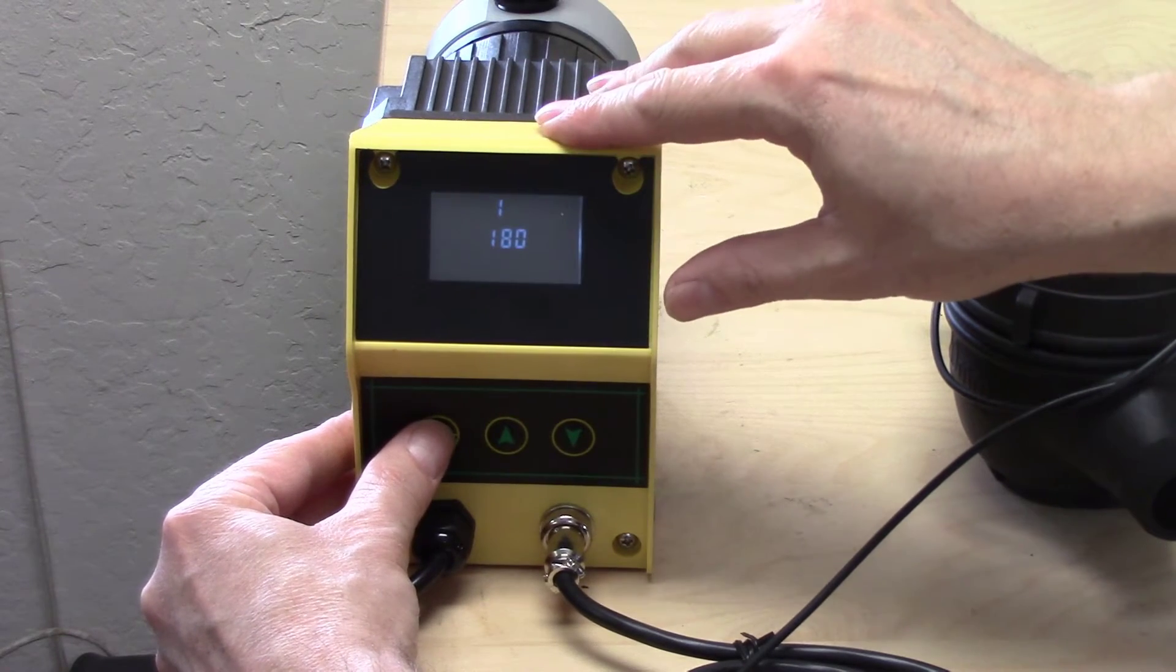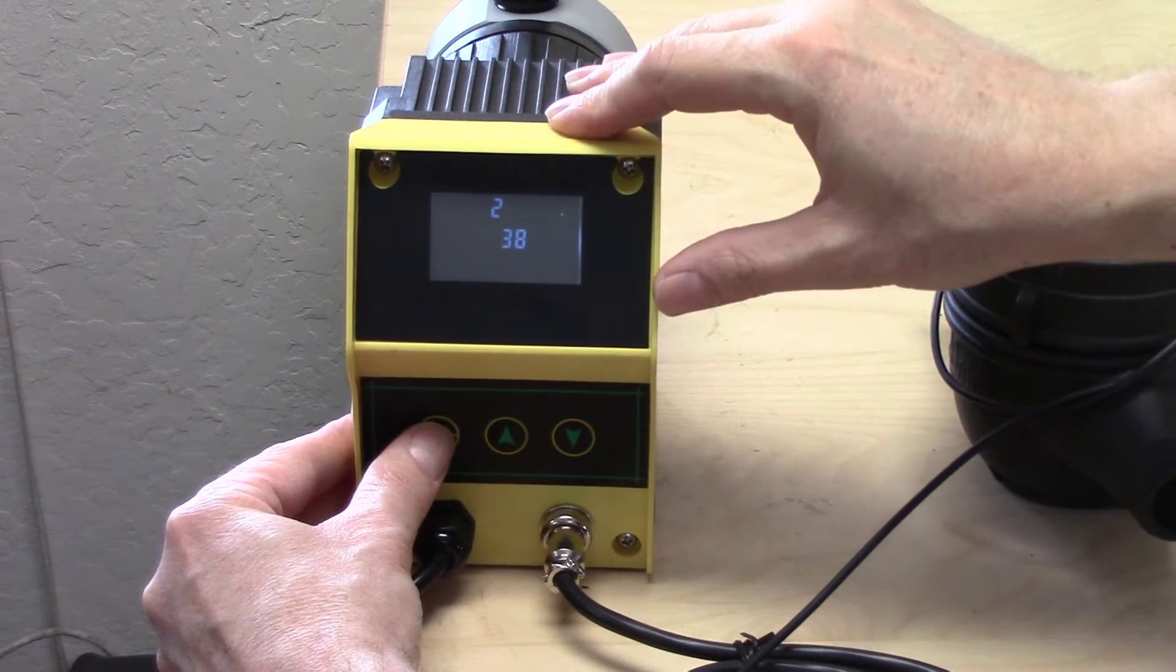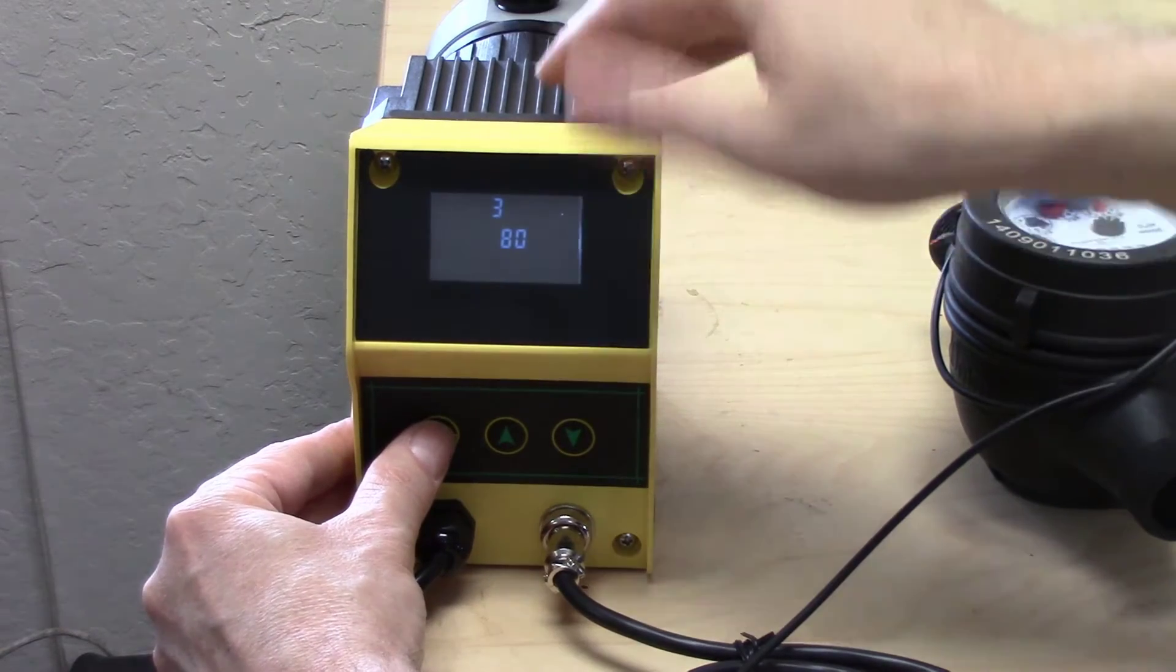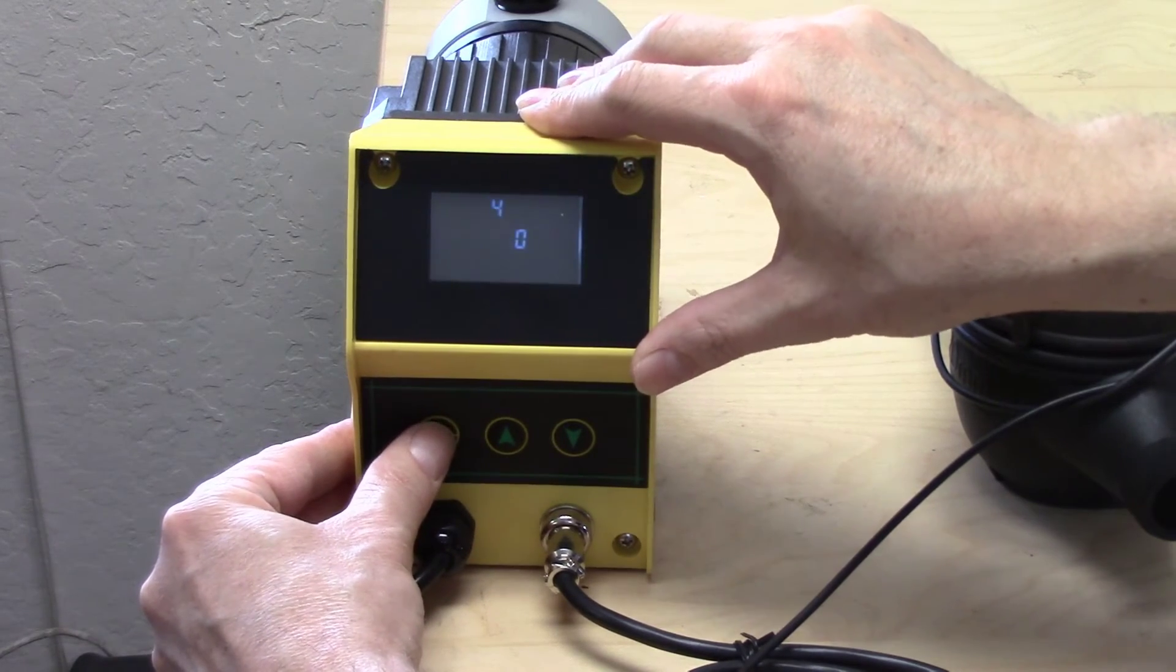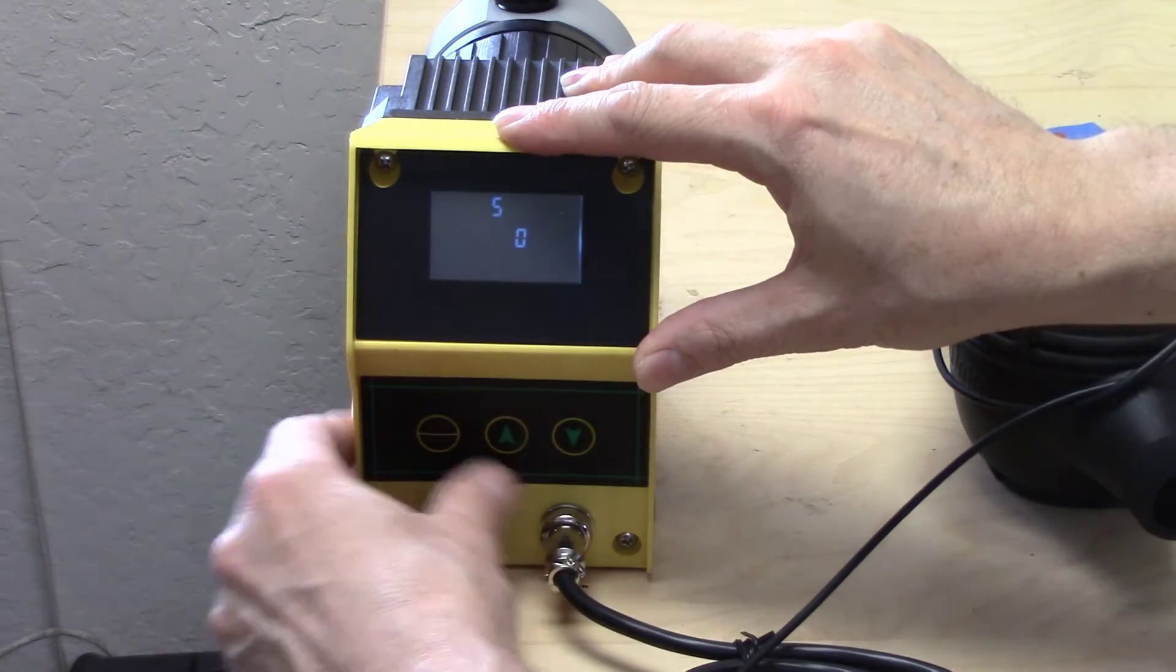Zero doesn't matter one way or the other. Number one must be set at 180. Two is setting it at 38, I'll be explaining that in a little bit. Three does not matter, it has a value of 80 but that doesn't matter. Four is zero, that doesn't matter. Number five is on zero, that means it's on manual.